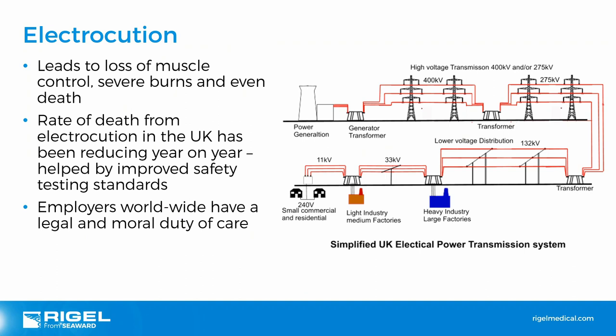Electrocution, depending on severity, can lead to loss of muscle control, severe burns and death. These levels of severity depend on several factors — the level of current is highly applicable, but also where the shock occurs, and even body type. The rate of death from electrocution in the UK has been reducing year on year thanks to improved safety testing standards. Employers worldwide have a legal and moral duty of care to protect not just employees but also the general public, and this especially applies to healthcare organisations where patients and visitors are involved.